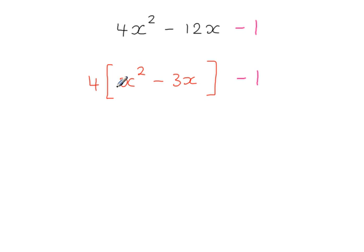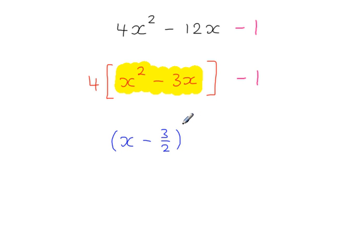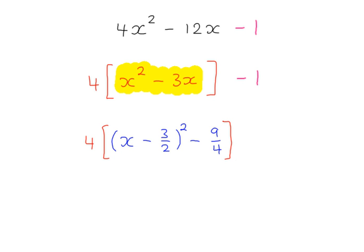Completing the square for just the x squared term and the x term — ignore everything else. We need half the coefficient of x, which is minus 3, so half of that is minus 3 over 2. So we get x minus 3 over 2, all squared, and there's always a minus, then take minus 3 over 2 and square it to give 9 over 4. Be careful — that sign is a minus. Everything here is multiplied by 4, and the minus 1 is just carrying along.